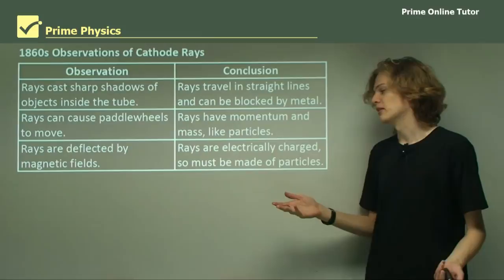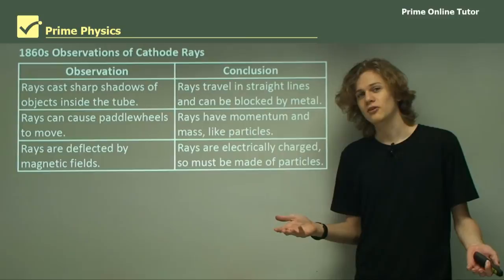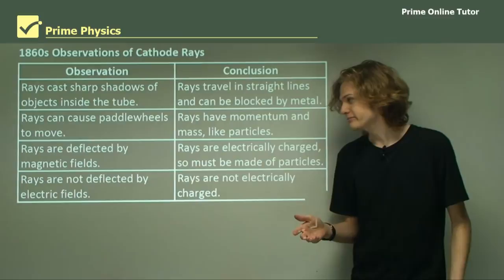The rays are deflected by magnetic fields. Well, the rays must be electrically charged, so they must be made out of a stream of particles. And it seems like we're getting closer to the discovery of the electron. But in fact, this was not the case, because there were two other very confusing observations.